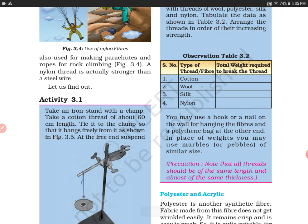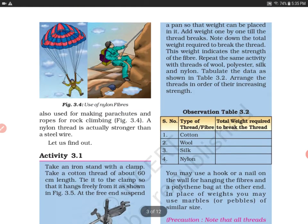Note down the total weight required to break the thread. This will tell you how strong the fiber is. If more weight is required to break the thread, it means that thread is stronger. This weight indicates the strength of the fiber—more weight means more strength.